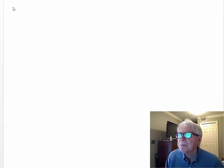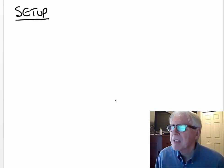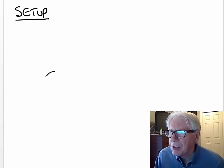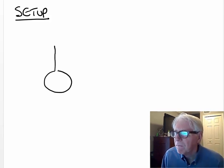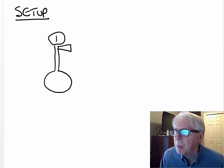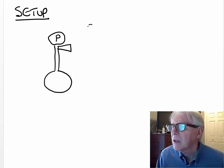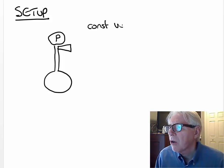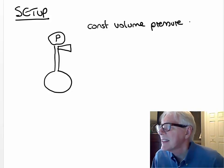Let's have a look at the setup. This system consists of a sphere connected to a rod, and in that rod we have a pressure gauge — that gives us our pressure. This is a constant volume pressure system.